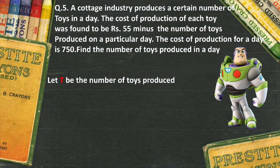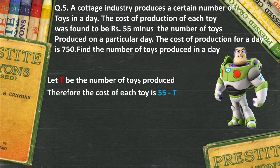The cost of production of each toy — how much money is required to make that one toy — is nothing but 55 minus the number of toys produced on that day. Therefore the cost of each toy is 55 minus t. For example, if 10 toys are produced, then the cost of each toy will be 55 minus 10, which is equal to 45. In this case I don't know the number of toys, so I write it as 55 minus t.